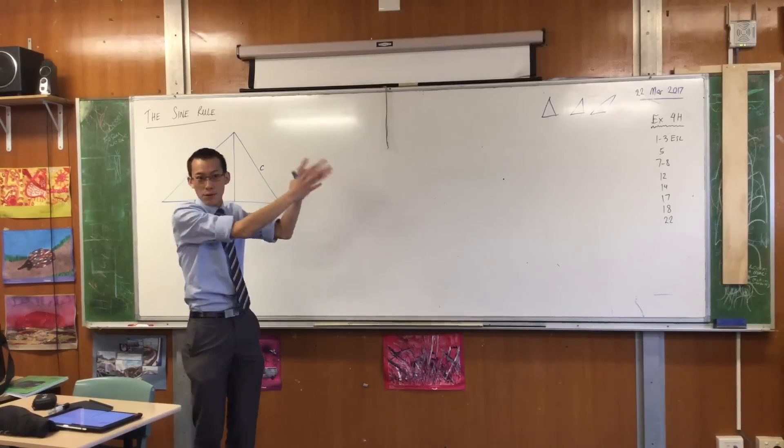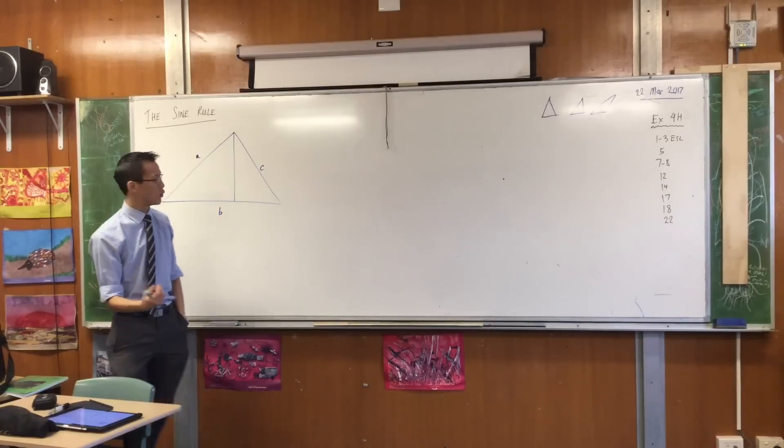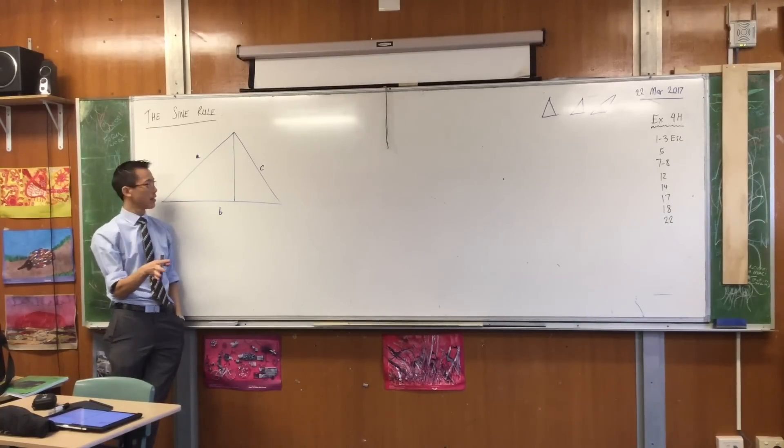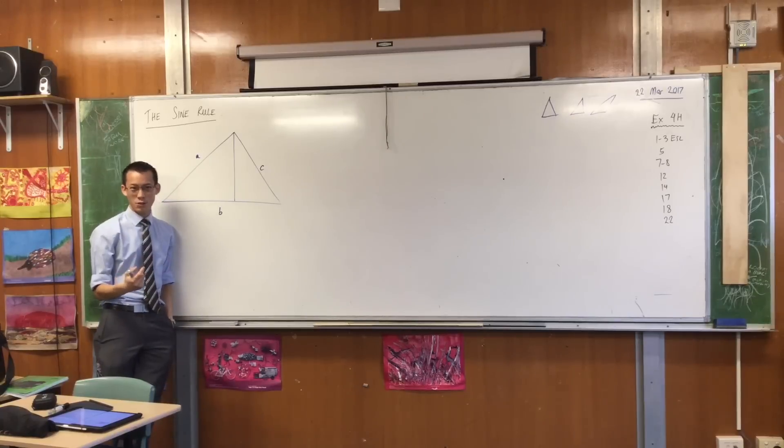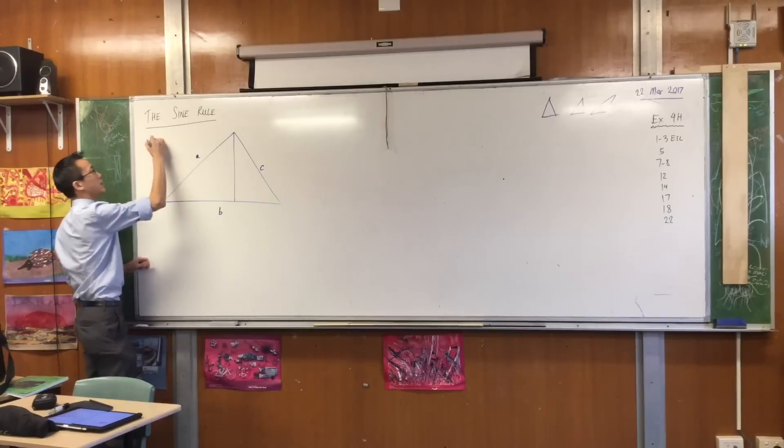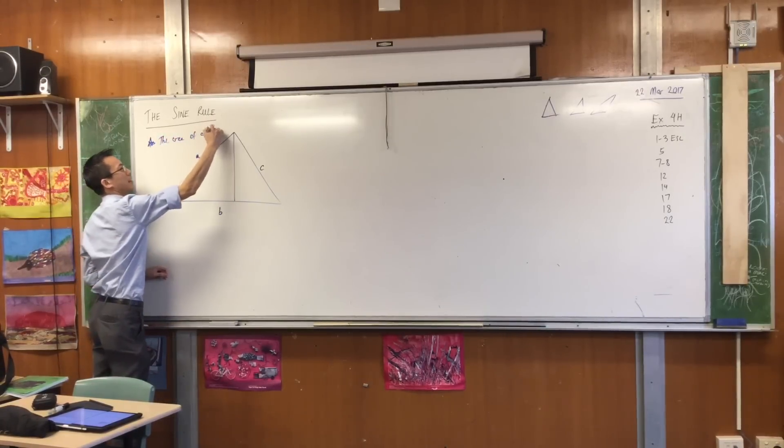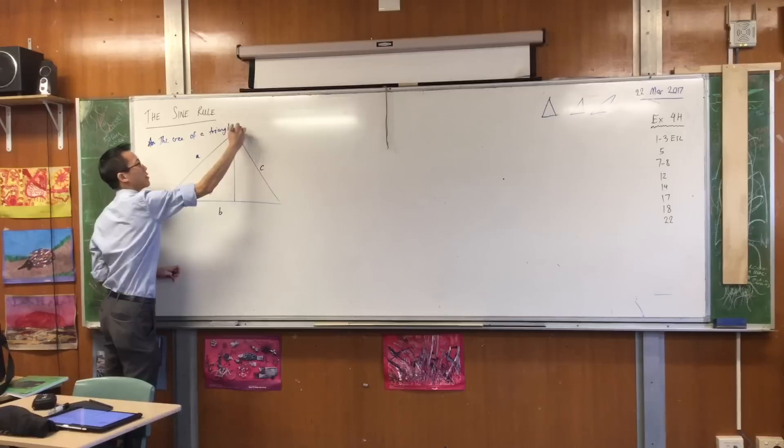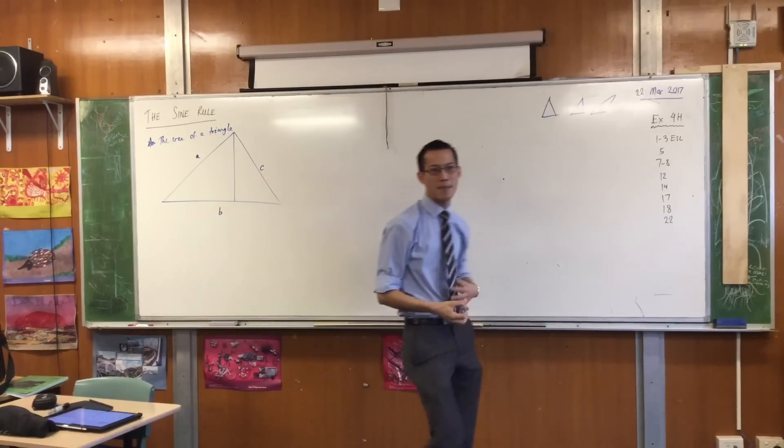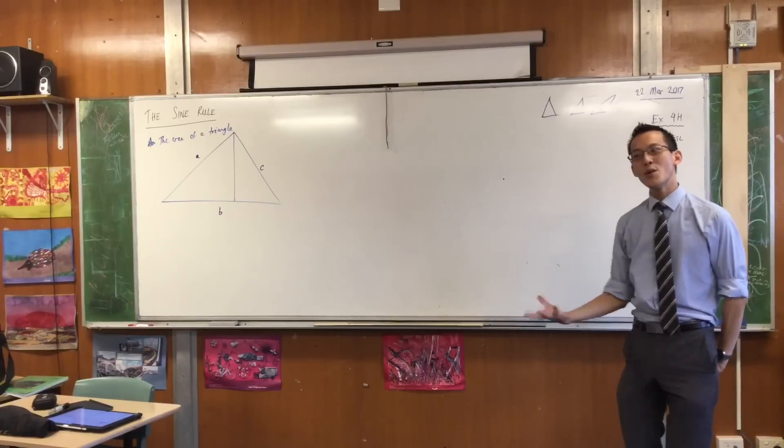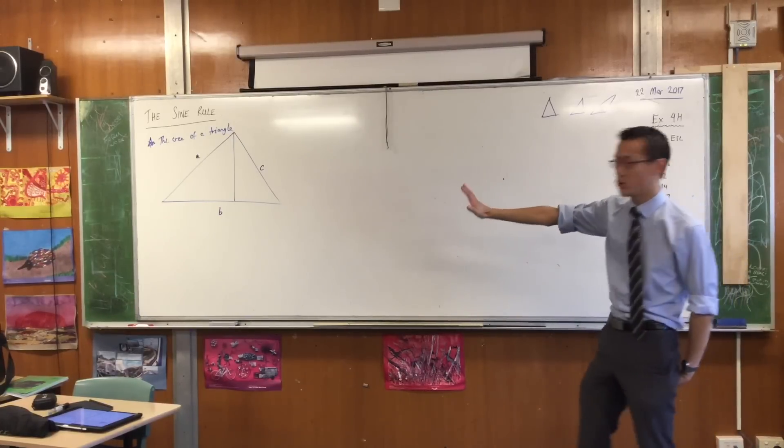So you've got that proof, you can access it, you can read it at your own leisure. What I want to do is show you a slightly different proof that doesn't need different versions, but it does require a little bit of extra work because we've got to develop a formula first. Another one that you know, which is the area of a triangle.